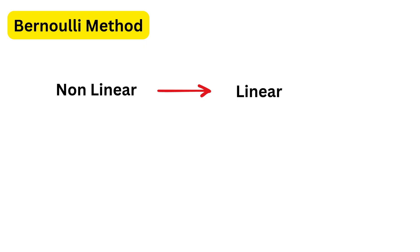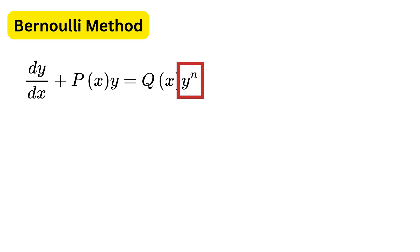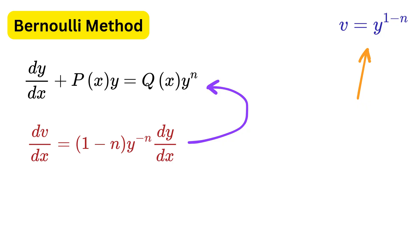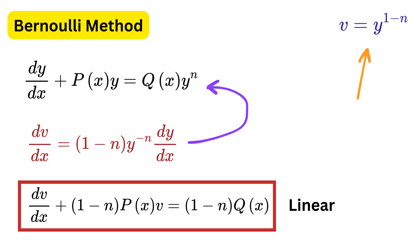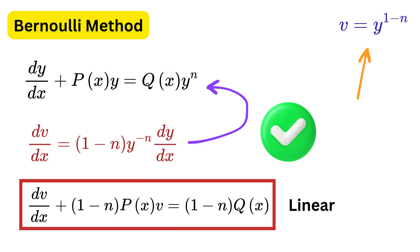Lastly, we discuss the Bernoulli method, which shows how a non-linear equation becomes linear. Bernoulli equations look like dy/dx plus p(x) times y equals q(x) times y raised to some power n. This is almost the same as the linear form except for the non-linear term y to the n. To linearize it, we use the substitution v equals y raised to the power (1 minus n), so dv/dx transforms accordingly. Rewriting the equation in terms of v gives a linear differential equation.